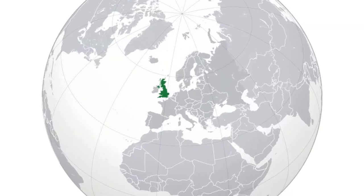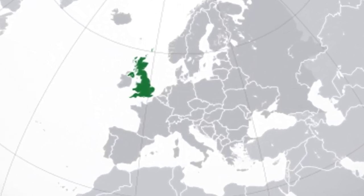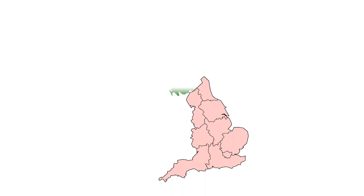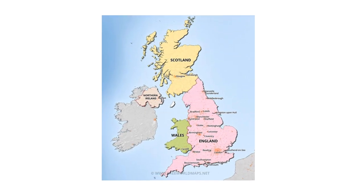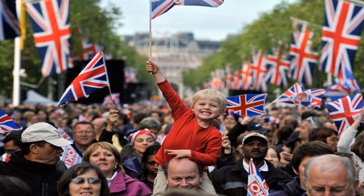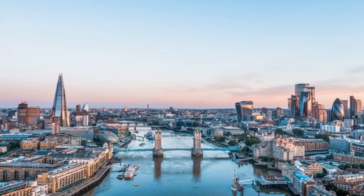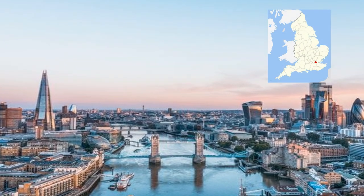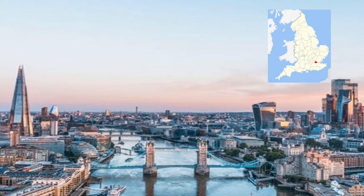The UK is located off the north-western coast of continental mainland Europe. It comprises England, Scotland, Wales and Northern Ireland. England is the biggest landmass, covering the southern two-thirds of the island of Great Britain. England's population is 56 million. The UK's capital and the largest city is London, in England.